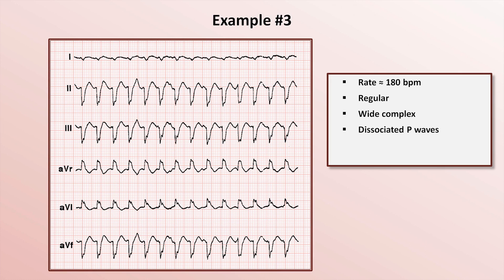Summarizing our findings: we have an unusually rapid, regular, wide-complex tachycardia with dissociated P-waves. We can be very certain this is ventricular tachycardia — specifically the monomorphic subtype.